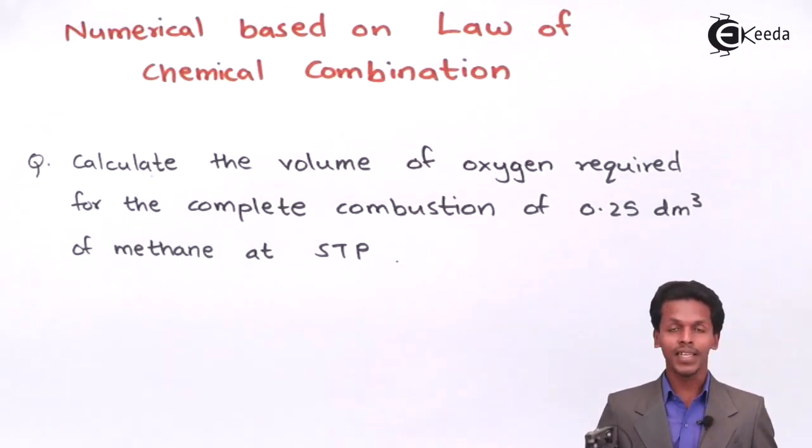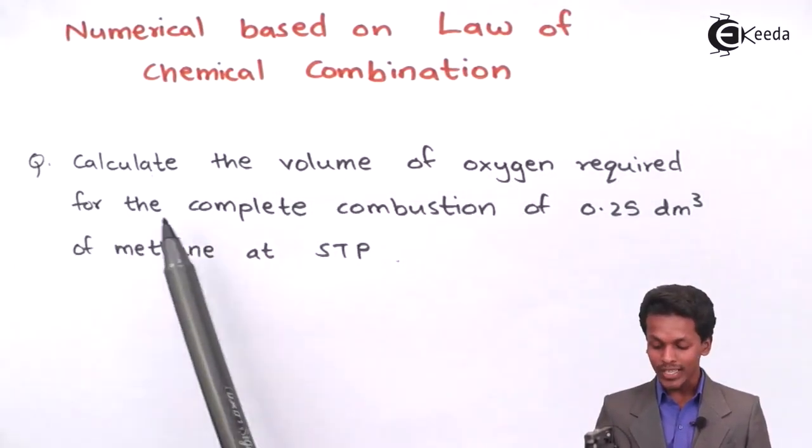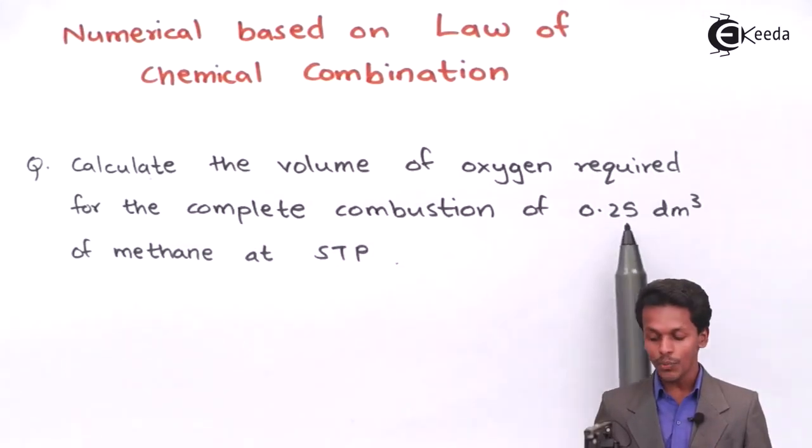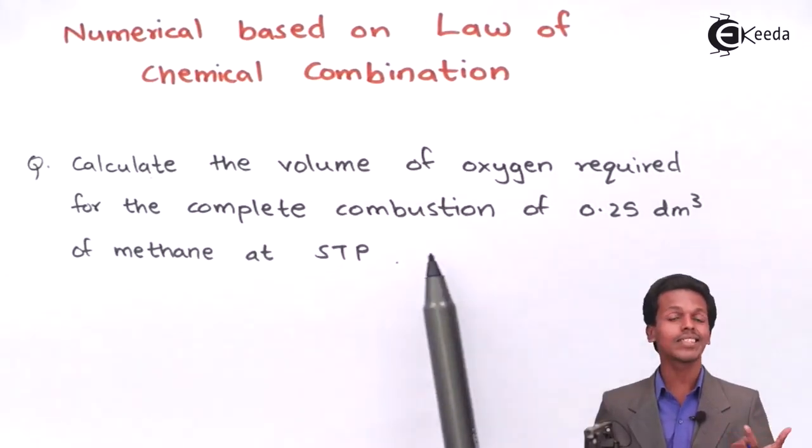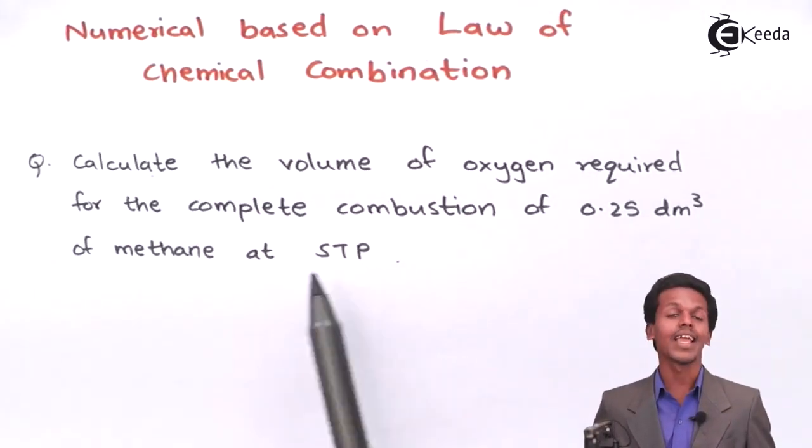As mentioned on your screen, we have to calculate the volume of oxygen required for complete combustion of 0.25 dm³. And in this case, 0.25 dm³ means 0.25 liter of methane at STP.